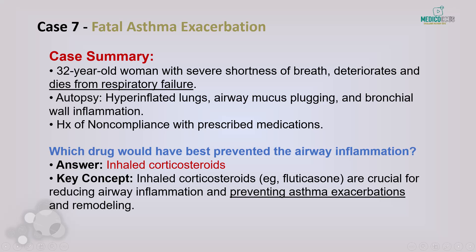Case 7: A 32-year-old woman with a history of non-compliance to asthma medications dies after an acute asthma attack. Autopsy reveals hyperinflated lungs, airway mucus plugging, and cellular infiltration of the bronchial wall. Long-term use of inhaled corticosteroids like fluticasone could have prevented the chronic inflammation and airway remodeling seen here. Non-adherence to inhaled corticosteroids can lead to fatal asthma exacerbations. Corticosteroids reduce airway inflammation and prevent structural airway changes that worsen asthma over time.